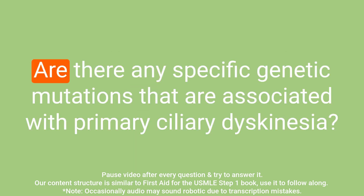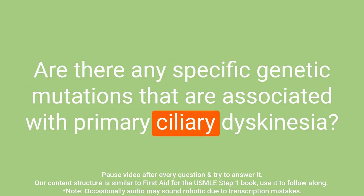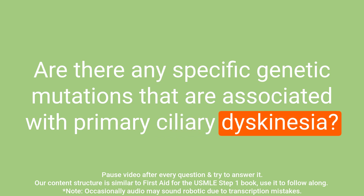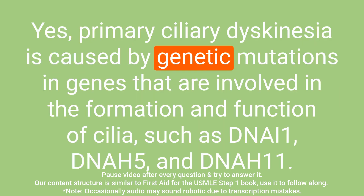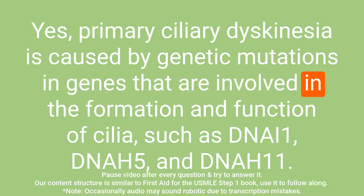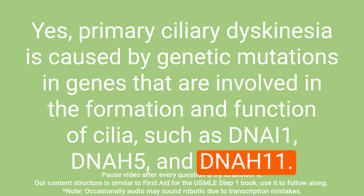Question: Are there any specific genetic mutations associated with primary ciliary dyskinesia? Answer: Yes, primary ciliary dyskinesia is caused by genetic mutations in genes involved in the formation and function of cilia, such as DNAI1, DNAH5, and DNAH11.